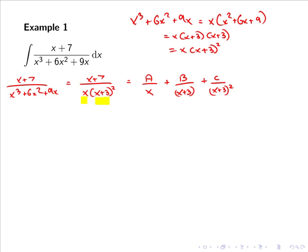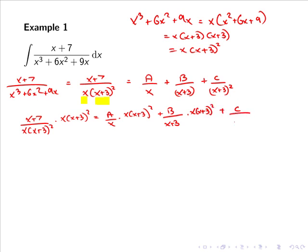Now if we cross multiply by x by x plus 3 squared, we would get x plus 7 equals a by x plus 3 squared plus b x by x plus 3 plus c times x. As we can see, a lot of the factors will cancel out and we are simply left with x plus 7 equals a by x plus 3 squared plus b x by x plus 3 plus c times x.